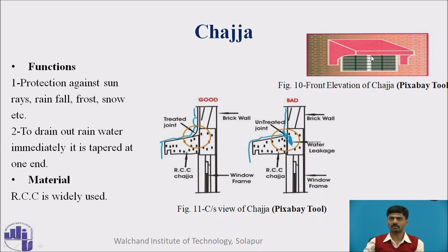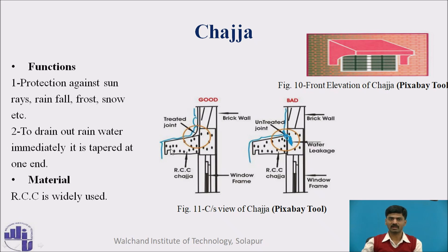Next is the chajja. This is the outer view and the internal structure of the chajja. It protects against sun, rain, frost, etc. This is the external elevation of a chajja — the external cantilever portion of your building. The same cantilever portion, if provided inside the wall, is called a loft. To drain out rainwater immediately, we provide a slope, making it easy to remove excess water. Materials used are RCC or sometimes steel, depending on the cost.